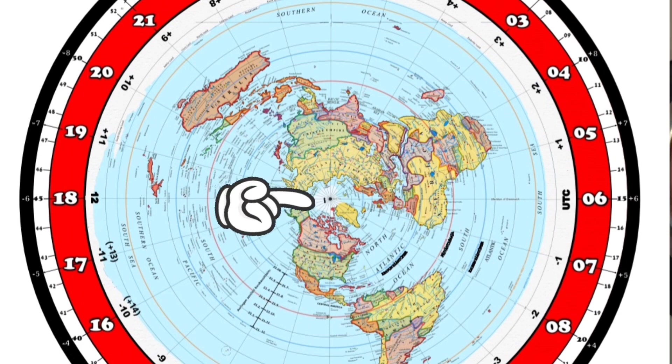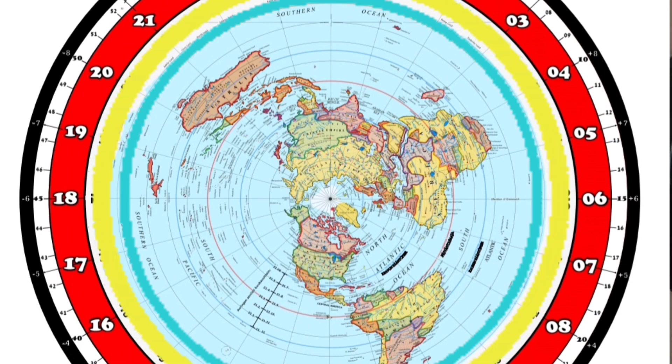On the map, the North Pole is in the center of the world, and the Antarctic goes around the outer rim of the world, going around the whole world.